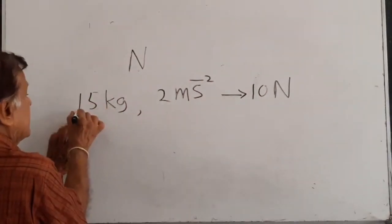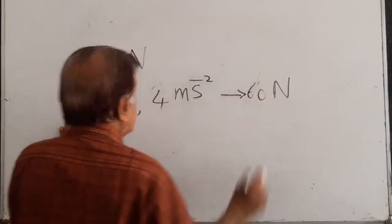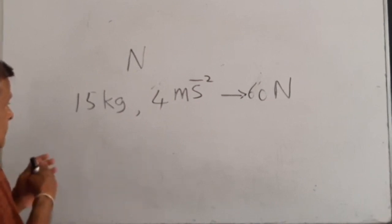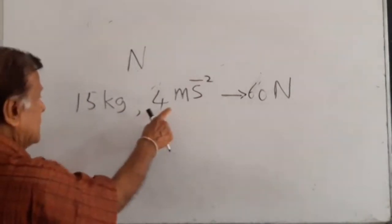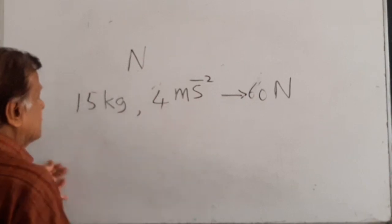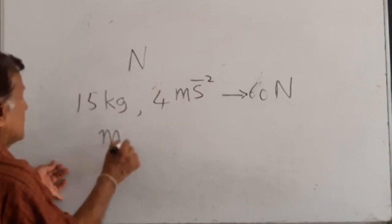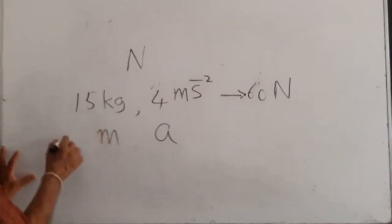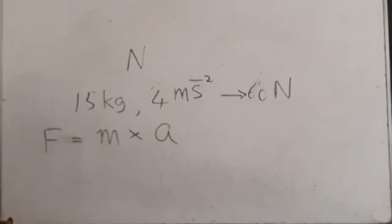If the mass is 15 and acceleration is four, then the force is 60. This shows that by multiplying the value of mass by the value of acceleration, you will get the required force. When you multiply mass by acceleration, you get the force. Force is equal to M times A, that is F equals MA.